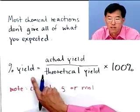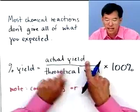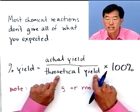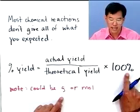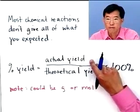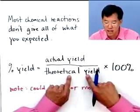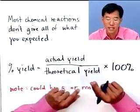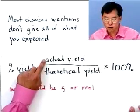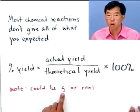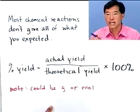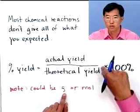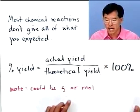Let's define a quantity called the percent yield. Percent yield equals the actual yield — the experimentally determined, go-into-the-lab-and-measure-it yield — divided by the theoretical yield, which we calculated based on what we put in, multiplied by 100%. Note that because it's the same compound in numerator and denominator, you can use actual and theoretical yield both in grams or both in moles and get exactly the same answer, since they're related by molar mass.